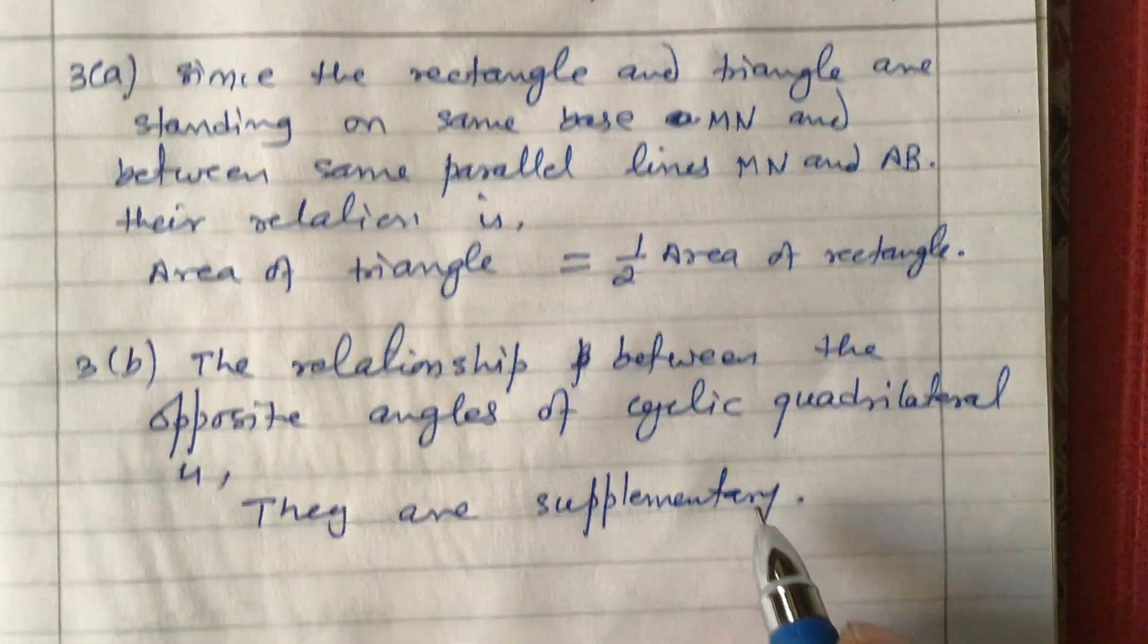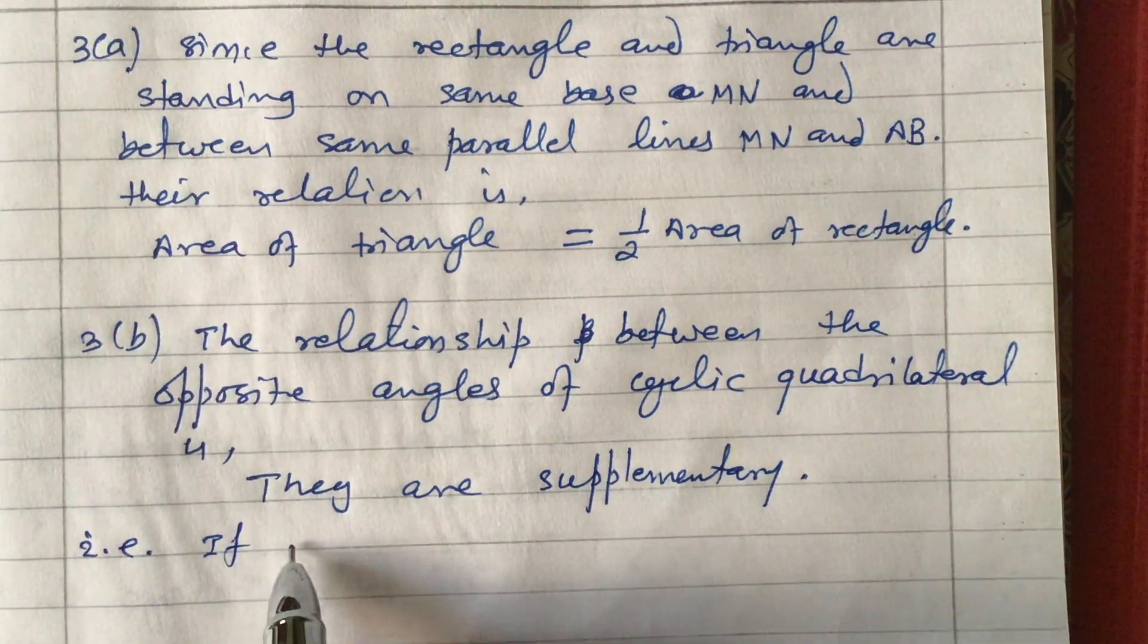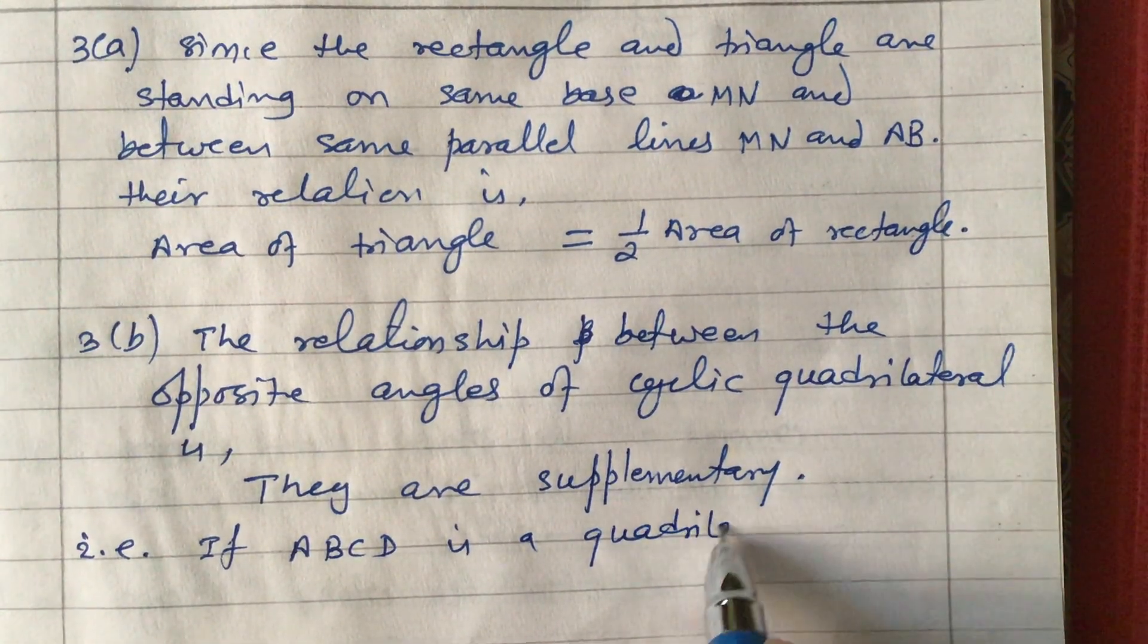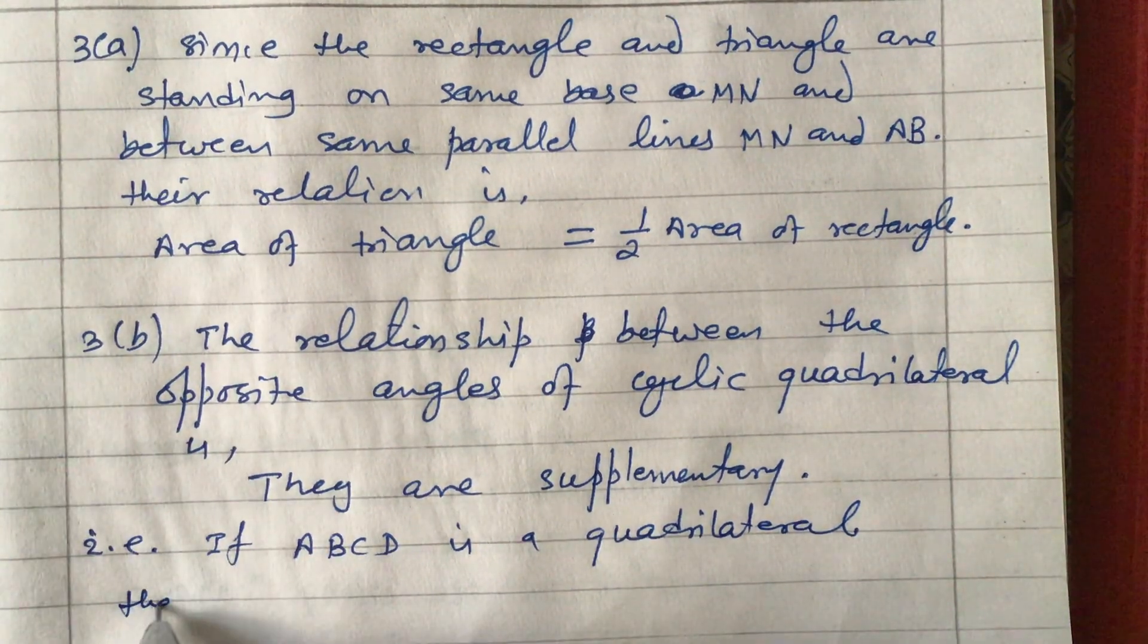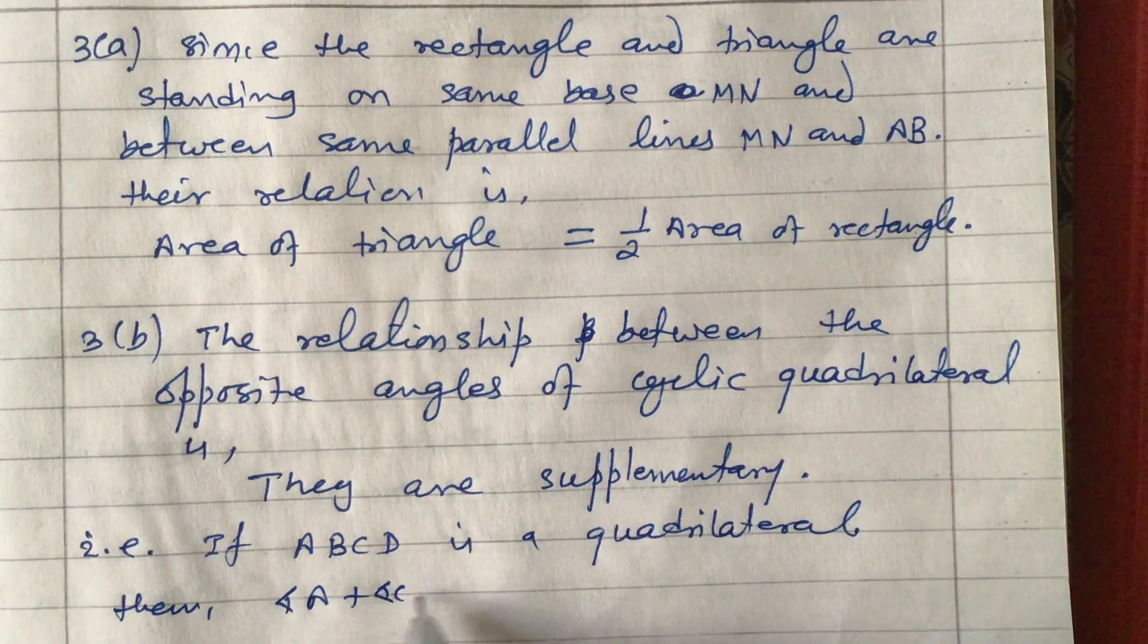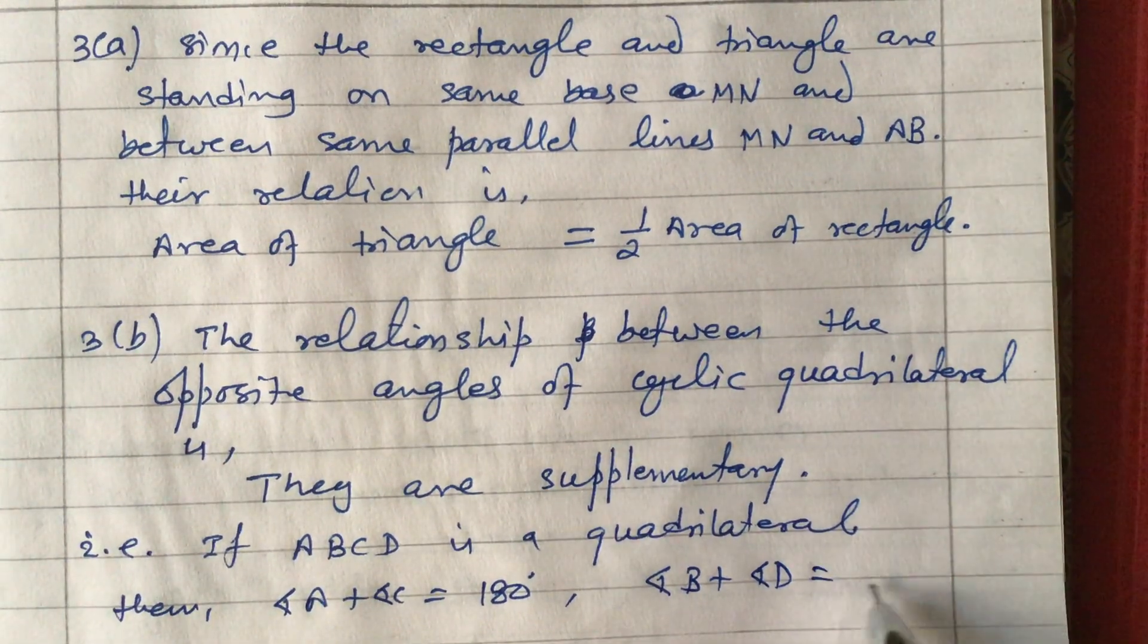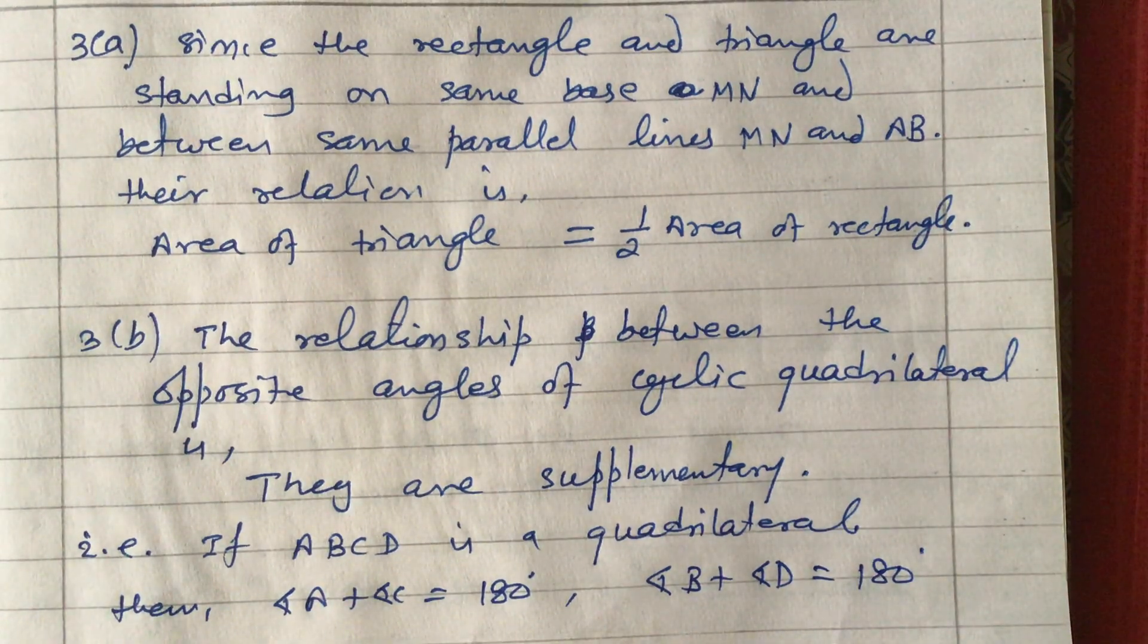Supplementary, or in other words, we can write like this: if ABCD is a quadrilateral, then angle A plus angle C equals 180 degrees, and angle B plus angle D equals 180 degrees. This is the relationship.